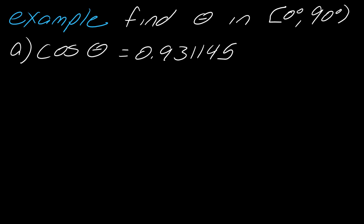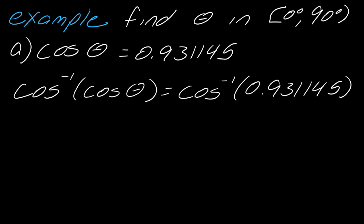Okay, so now let's talk about a few examples. So, I've got cosine of theta equals 0.931145. Alright. So, I want to make sure that you know how to properly use notation here. So, the way that we think about this, you're really taking the inverse cosine of each side. So, in setting this up, notice that I've literally done that. I've taken inverse cosine of each side.